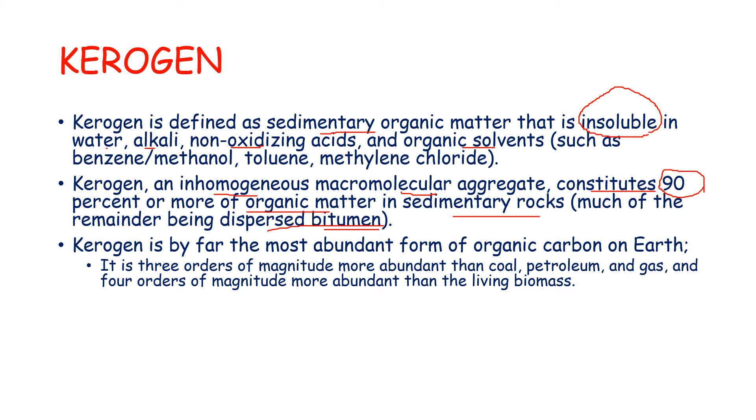Now, kerogen then becomes by far the most abundant form of organic carbon on Earth. It is three orders of magnitude more abundant than coal, petroleum, and gas, and four orders of magnitude more abundant than living biomass. So then kerogen becomes a huge collection of organic material in sedimentary rocks.